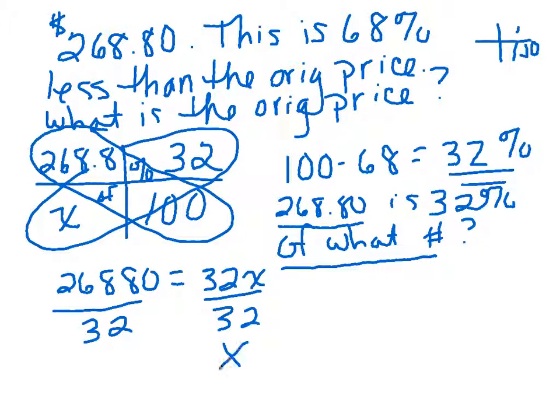My calculator—we're going to get $840. So again, do a check. If something cost $840 originally and we took a 68% discount and we paid $268, does that make sense?